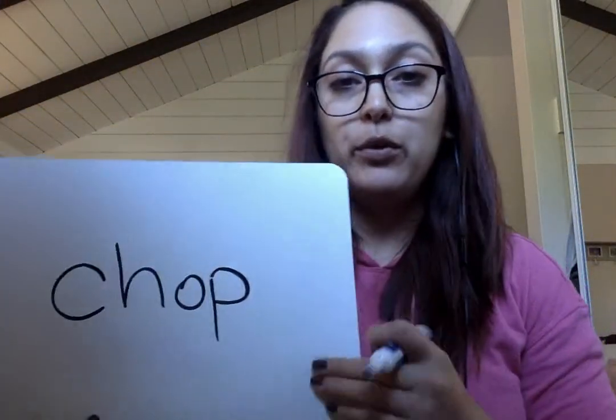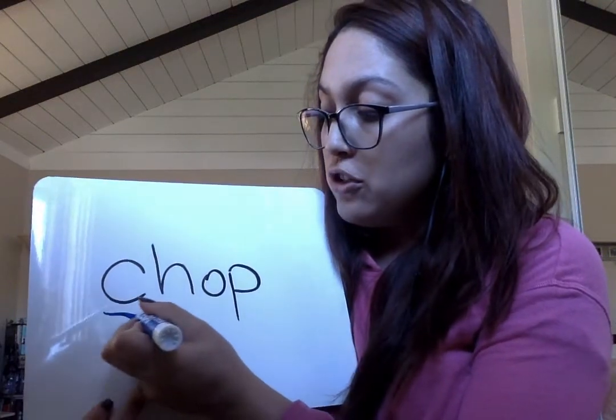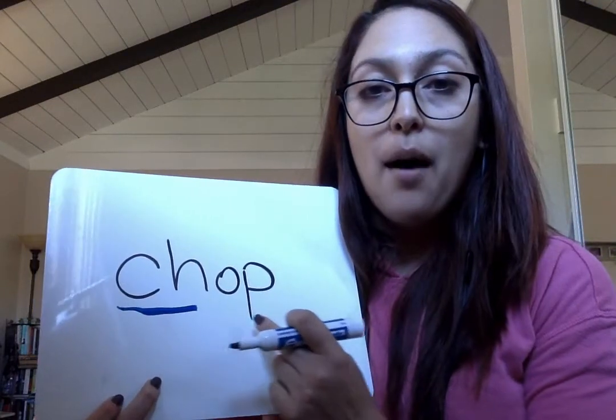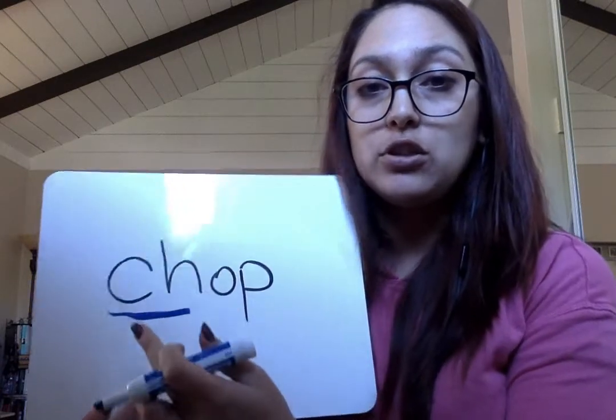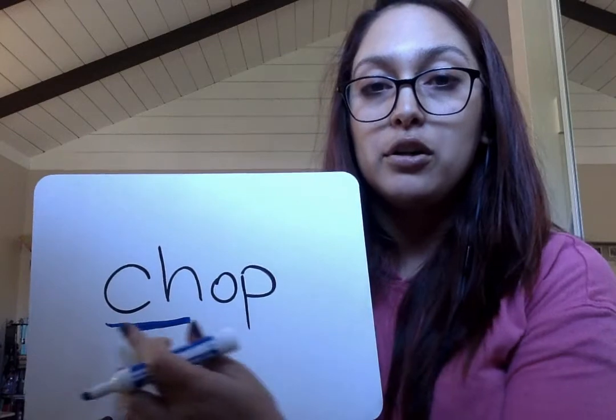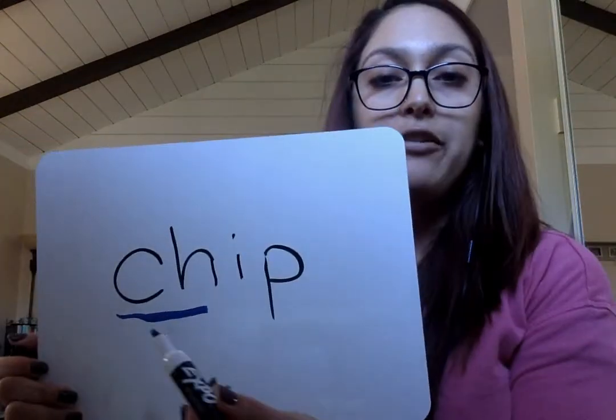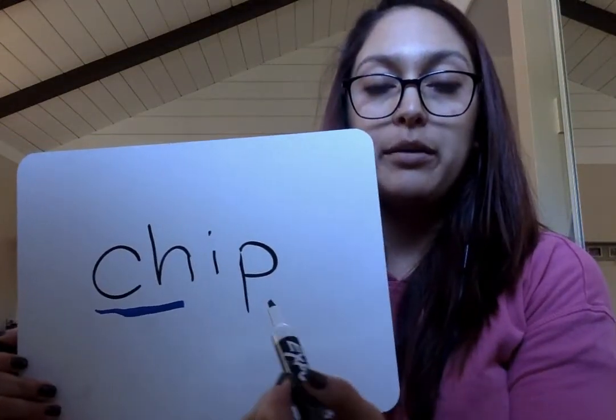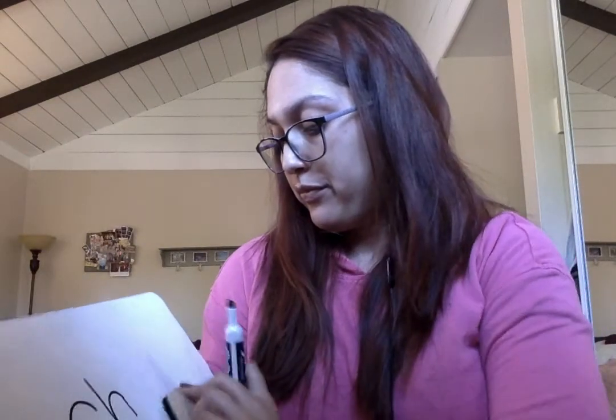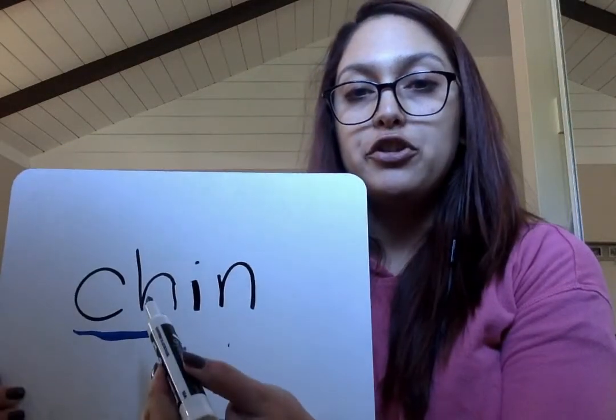When we put CH together with letters that we already know, we have CH-AW-P. So even though there are four letters, there are still three sounds: CH, AW, P — CHOP. Now we have CH-I-P — CHIP. And now we have CH-I-N — CHIN.